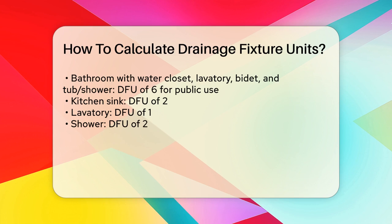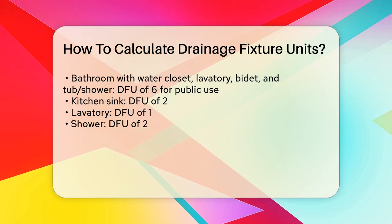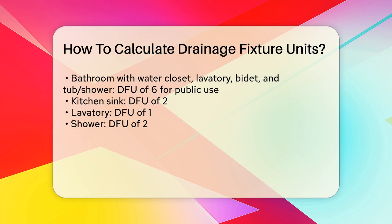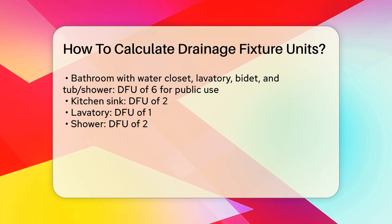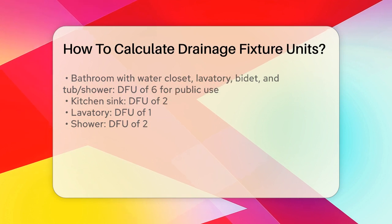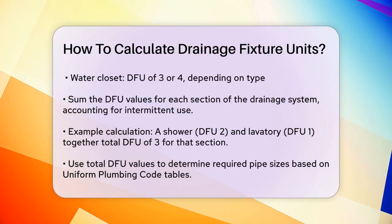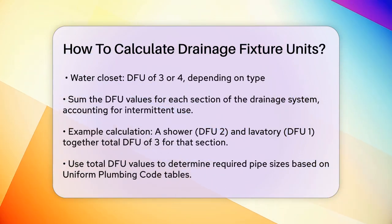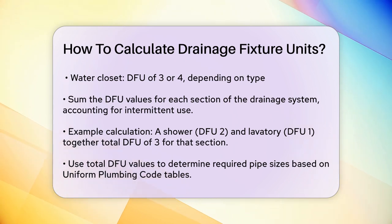Once you have the DFU values for each fixture, you need to sum them up for each section of the drainage system. This is because fixtures are never used all at the same time, so you need to account for intermittent use. For instance, if you have a pipe section that serves a shower with a DFU of two and a lavatory with a DFU of one, the total DFU for that section would be three.